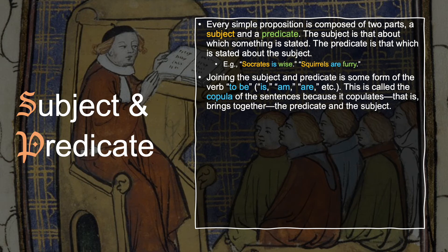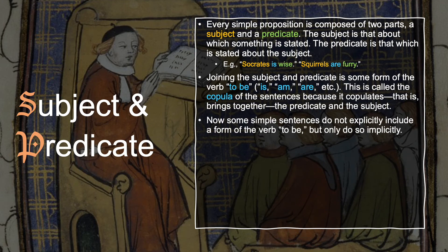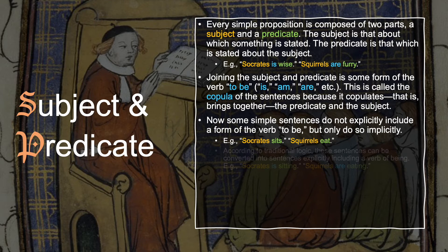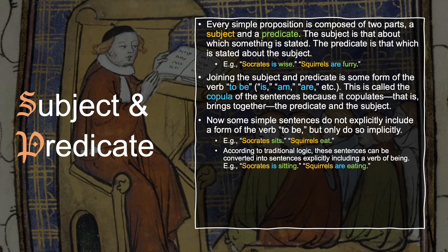Joining the subject and the predicate is some form of the verb to be—for instance, is, am, or are. This is called the copula of the sentence because it copulates, that is, brings together, the predicate and the subject. Some simple sentences do not explicitly include a form of the verb to be, but only do so implicitly—for instance, 'Socrates sits' or 'squirrels eat.' According to traditional logic, these sentences can be converted into sentences explicitly including a verb of being: 'Socrates is sitting' or 'squirrels are eating.'